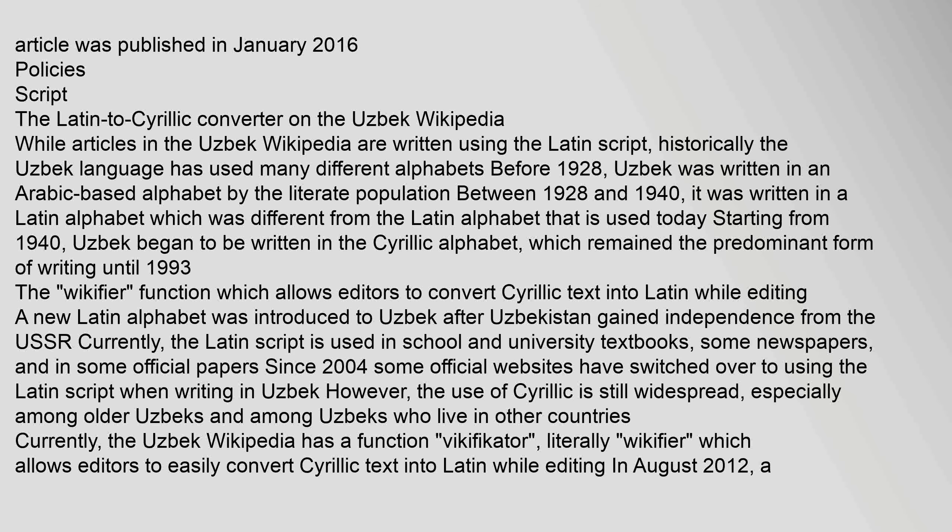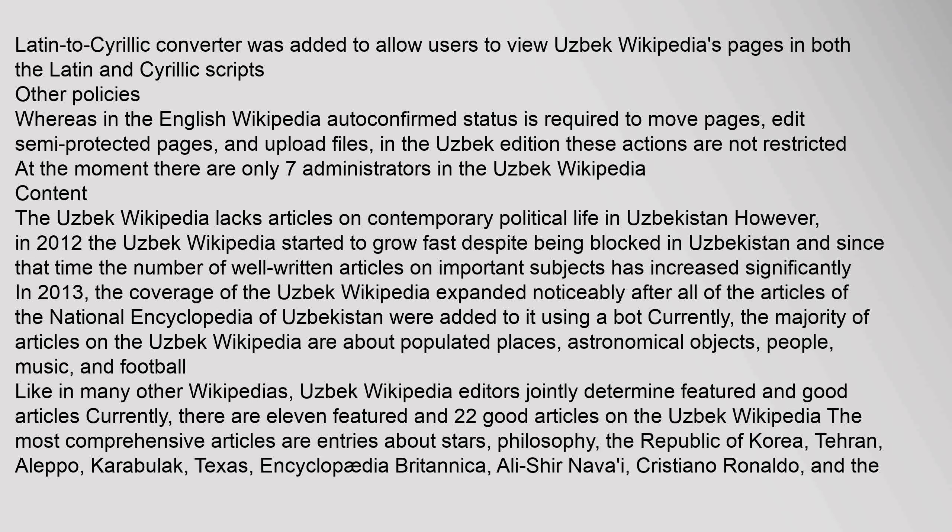A new Latin alphabet was introduced to Uzbek after Uzbekistan gained independence from the USSR. Currently, the Latin script is used in school and university textbooks, some newspapers, and some official papers. Since 2004, some official websites have switched over to using the Latin script. However, the use of Cyrillic is still widespread, especially among older Uzbeks and among Uzbeks who live in other countries. The Uzbek Wikipedia has a function which allows editors to easily convert Cyrillic text into Latin while editing. In August 2012, a Latin to Cyrillic converter was added to allow users to view pages in both scripts.